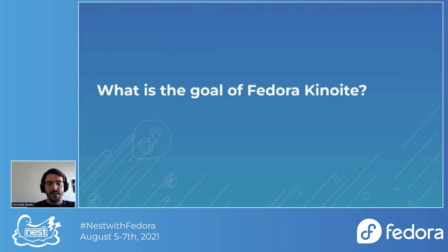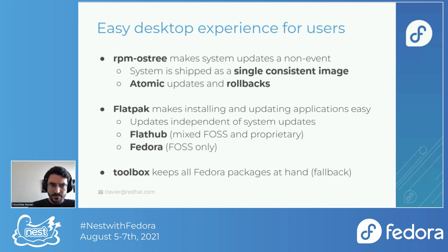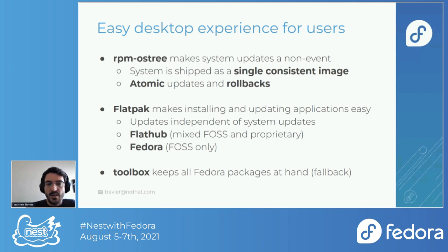Why do we even bother creating a new variant of Fedora? We're not doing it just for the sake of doing it. The main idea is we want to make sure the desktop experience is great for users. We get this by using rpm-ostree, which gives us a really nice update experience for the base system, because the whole system is shipped as a single consistent image. When you do an update, you either update the whole system or not at all, and you do that offline in a sense — you get the new version and reboot. The updates are atomic, you get rollbacks, and you can go back if anything happens.